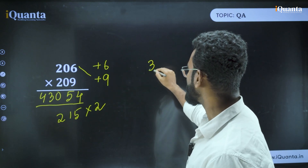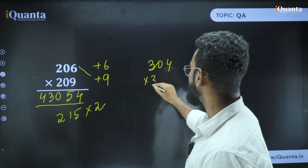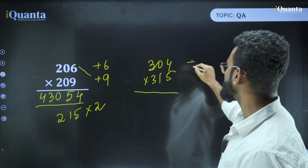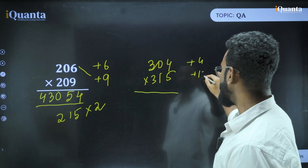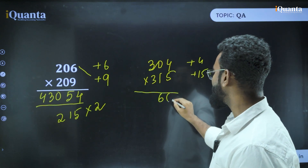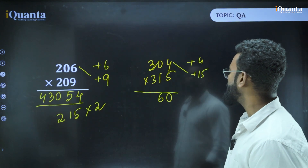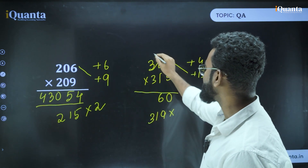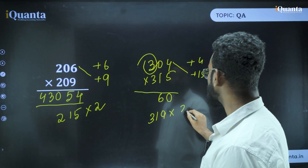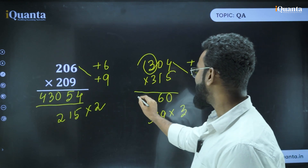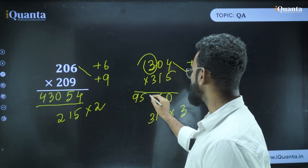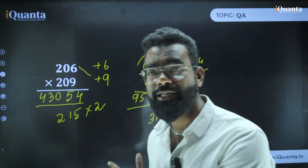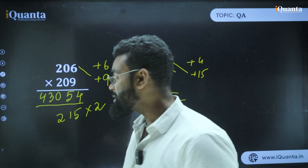Now if the numbers are close to 300 — say 304 into 315 — the deviations are plus 4 and plus 15. So 4 into 15 is 60; write down 60. Next step: 304 plus 15 is 319. Multiply by the leading digit 3: 319 into 3 is 957. So the answer is 95760.